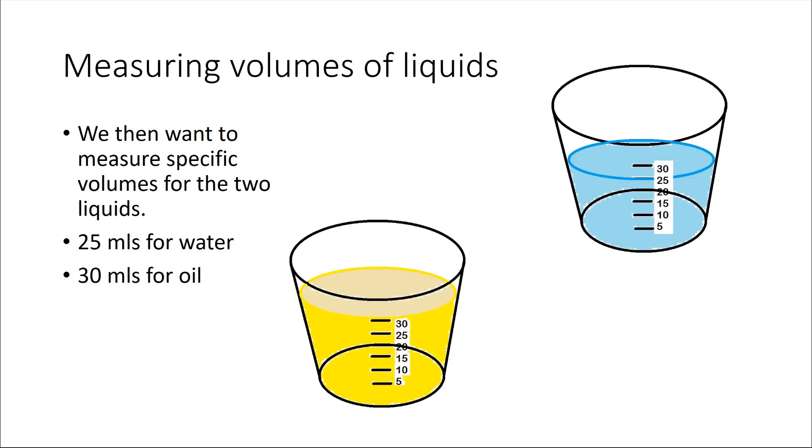You will then use those medicine cups as a measuring tool to measure out specific volumes of our two liquids of interest. We'll want to measure out 25 ml of water in one of the medicine cups and 30 ml of oil in the other.